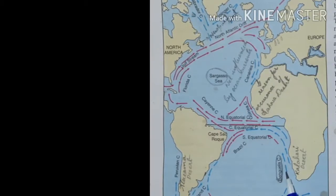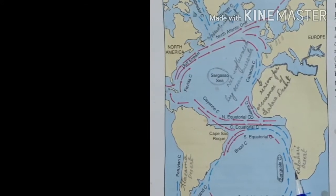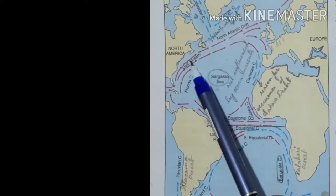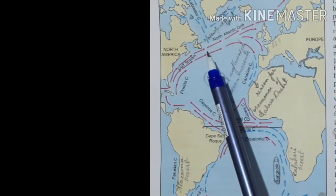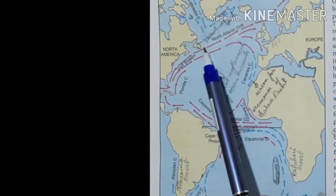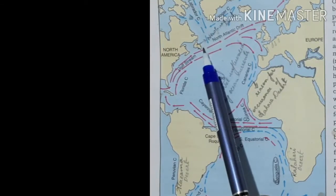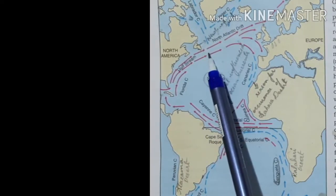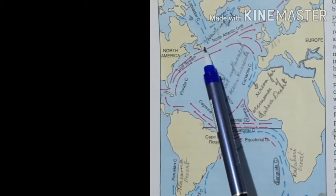Cold currents also reduce the amount of rainfall — that is why this region has the Kalahari Desert. Where the Gulf Stream and the cold Labrador Current meet together, a moderate condition is created for the growth of plankton. Near the island of Newfoundland, there is a fishing ground named Grand Banks. Here the Labrador Current and Gulf Stream mix, leading to the growth of plankton, which is a nutritious food for fish. So Grand Banks is an important fishing area.